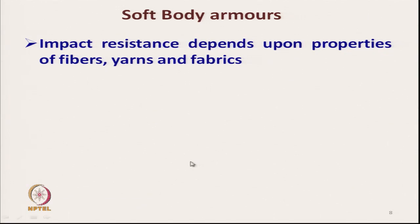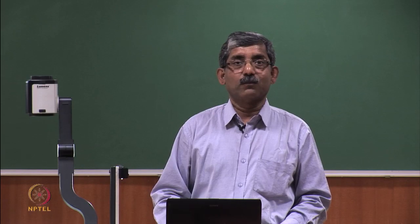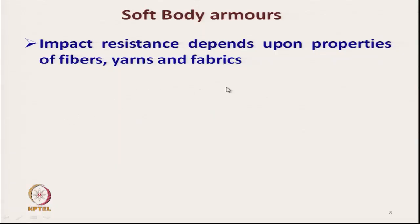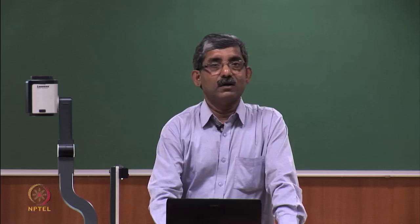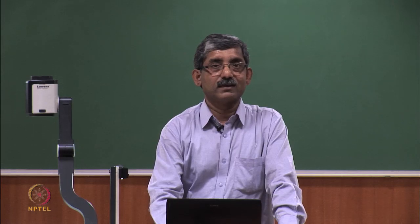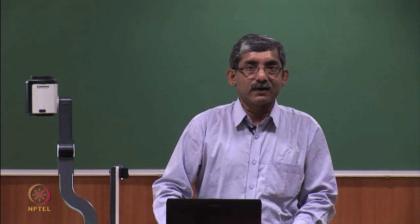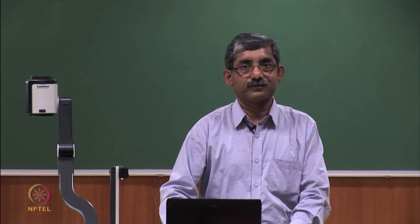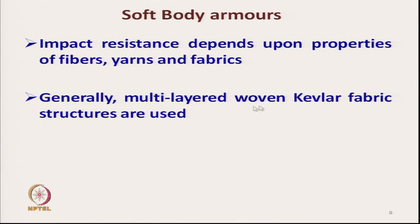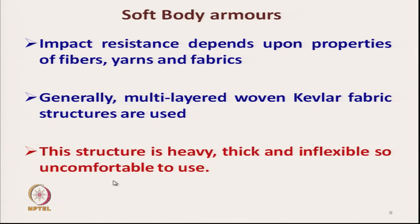In soft body armours, the impact resistance — that is, protection — depends on the properties of fibres, yarns, and fabrics. Generally, multilayered woven Kevlar fabrics are used. As discussed, 20 to 30 layers are required, which makes these structures heavy, thick, and inflexible, and effectively uncomfortable to use.